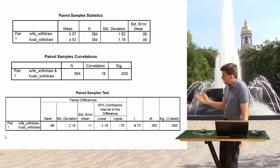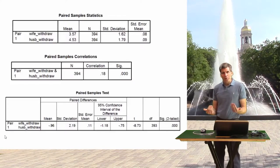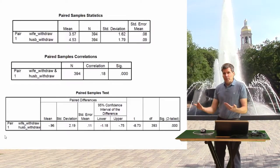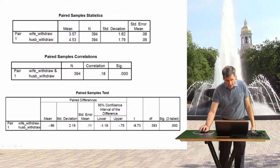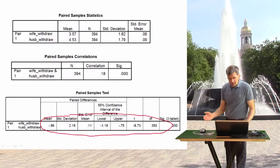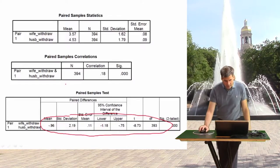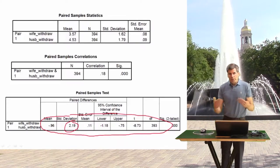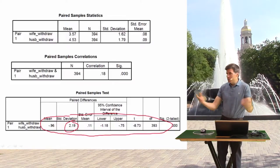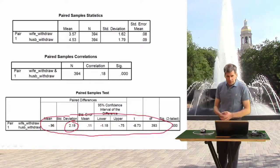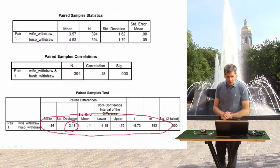A few things make this output different from two independent samples. There is no Levene's test for equality of variances, and there is only one row for the t-test rather than two. That's because with a paired samples t-test, we don't need to worry about the assumption of equality of variances — there's only one group and one standard deviation, the standard deviation of the difference scores. So there's no need to compare two standard deviations.